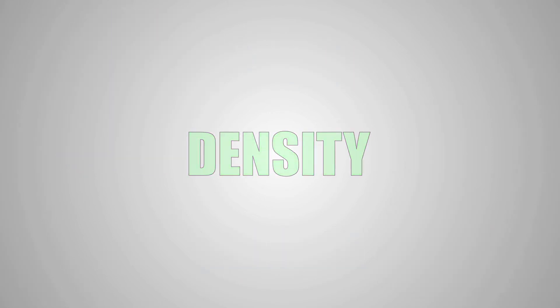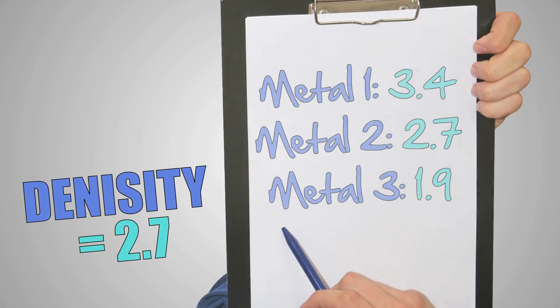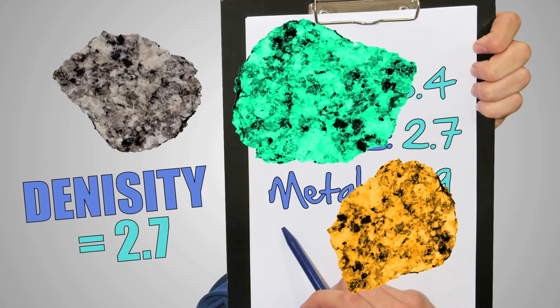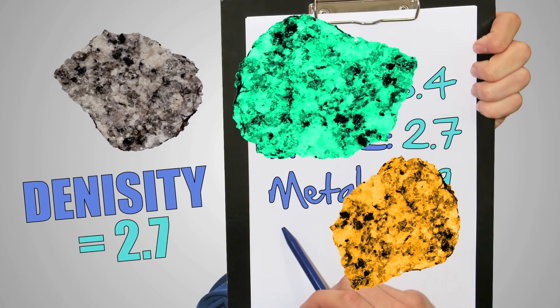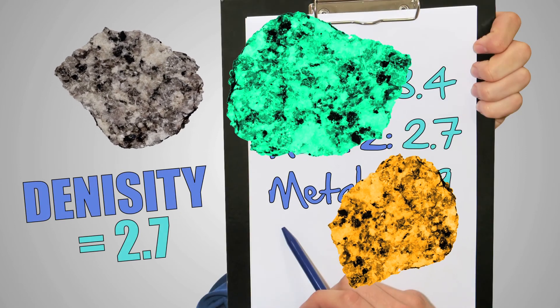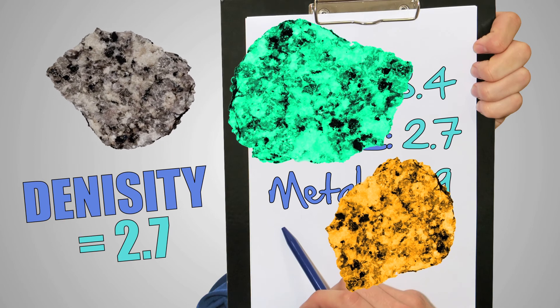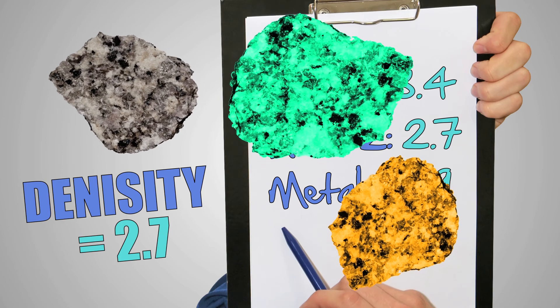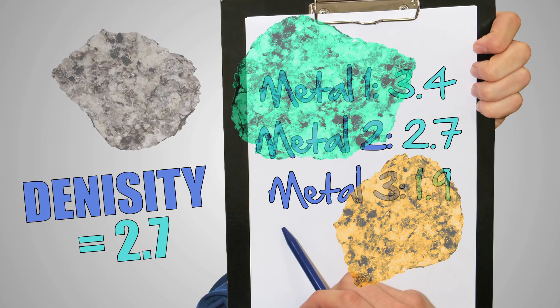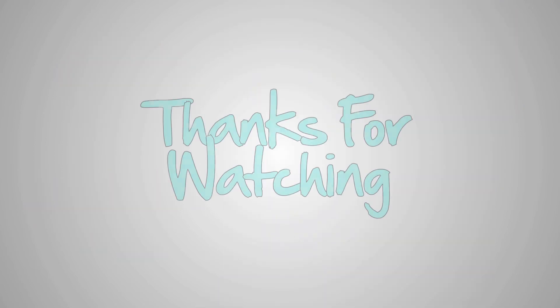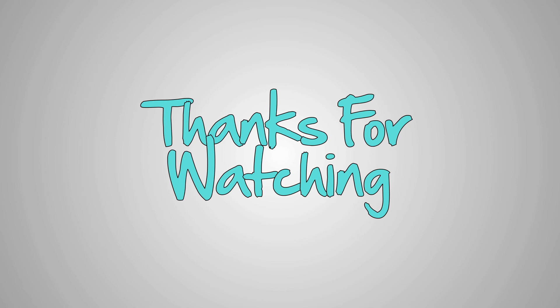Once your density was calculated, you simply had to compare your result to the chart of metals and their densities. Which materials did you have? Having this knowledge could come in handy someday. It is a useful lesson to understand. Thanks for watching.